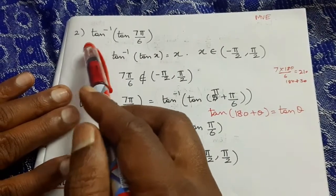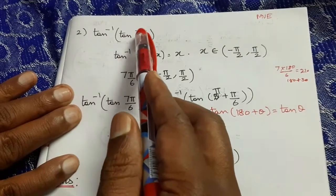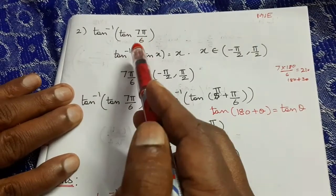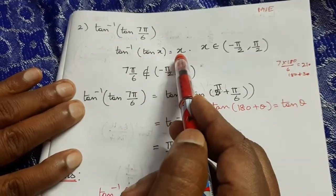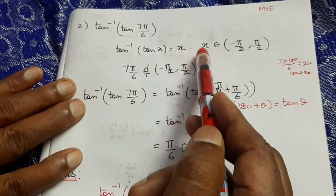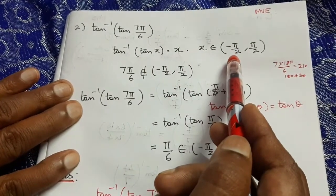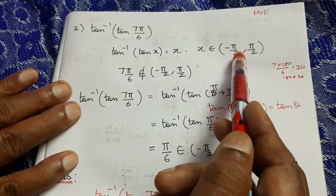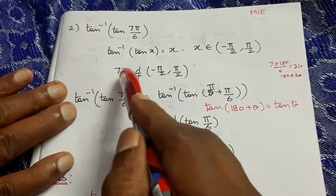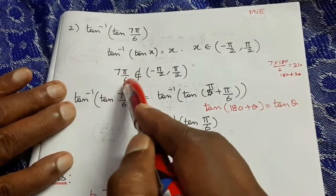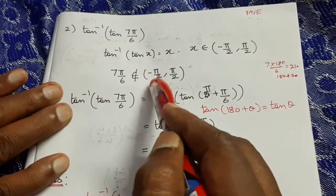Second problem: tan⁻¹(tan(7π/6)). We know tan⁻¹(tan x) = x where x belongs to the open interval (−π/2, π/2). Now 7π/6 = 210°, which does not belong to (−π/2, π/2).